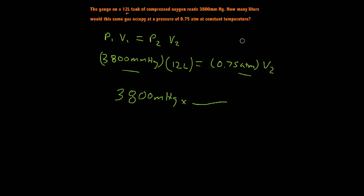and a lot of teachers will give this to you, some may not, but basically you have 760 millimeters of mercury for every one ATM. So for every one atmospheric pressure unit,